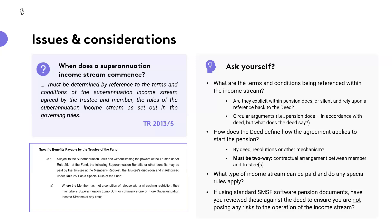Any well-constructed deed when it comes to pensions isn't going to be too prescriptive. You don't want to have all conditions set out within the deed so that any time there is a change, you're then going to have to make a deed change as well. Minimum pension factors stipulated within the rules might be a good example — if they determined you needed to take 4% and then during COVID that was halved, you'd still be required to take 4% under a rigid deed.